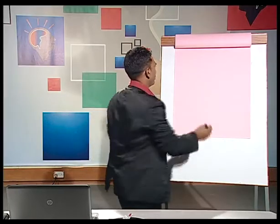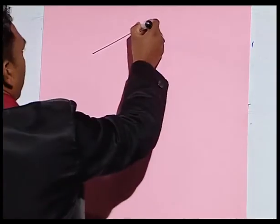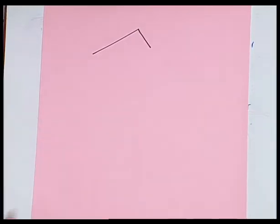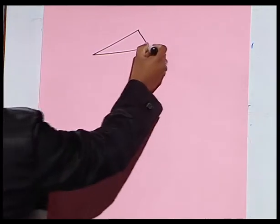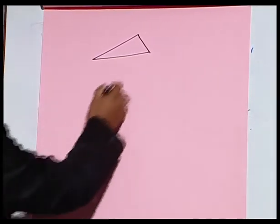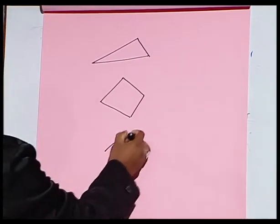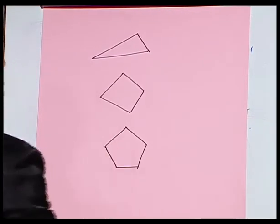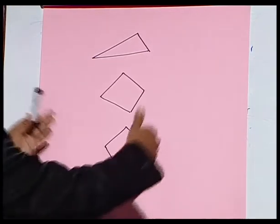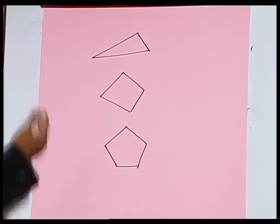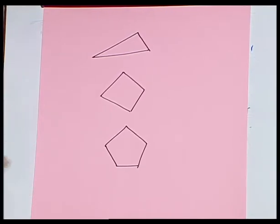Now, think about the minimum number of lines required to have a polygon. If we have a straight line, of course it is not a polygon. Adding another line gives us two straight lines — still not a polygon because it is open. We need a third line to make it become a polygon. We can use four lines, five lines, six lines, seven lines, etc. But the minimum number of lines required to draw a polygon is three.